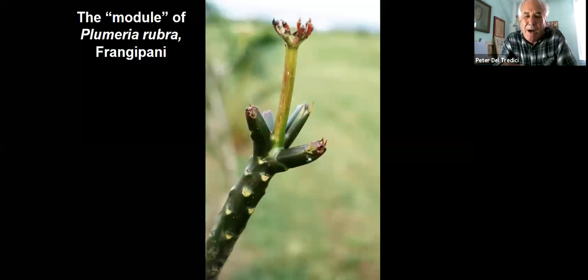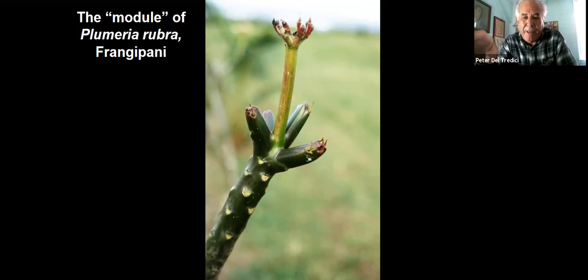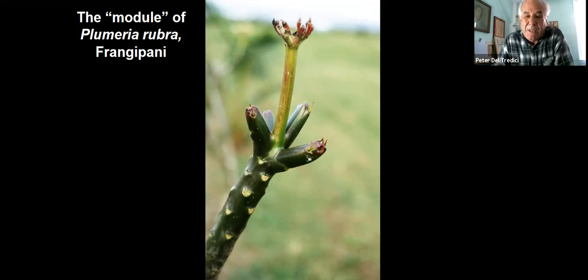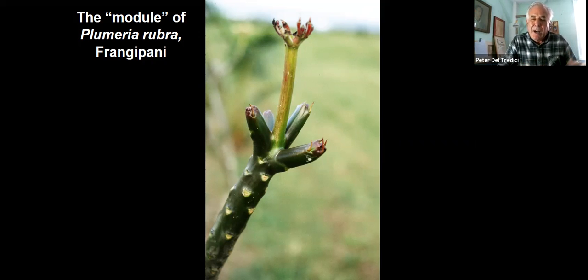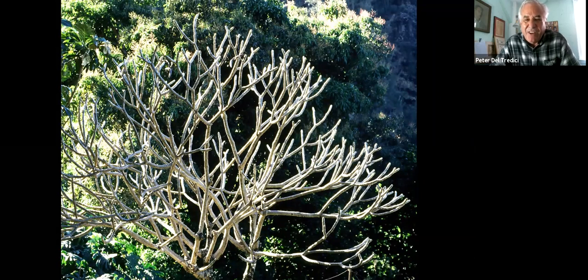This is what I mean by a module. There's the growth of a shoot, and then that growth terminates with the production of a flower. This is the Plumeria plant, the frangipani. Because the inflorescence represents the end of that growth, the branching occurs immediately below that flower. This is the module, and this is the way the Plumeria grows — it's like a stick figure tree, basically.